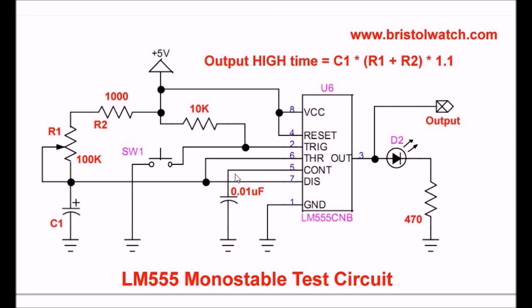Pin 5 has a bypass capacitor. Pin 1 is ground. Pins 7 and 6 — that's threshold and discharge — are connected to a resistor-capacitor circuit. The resistive circuit is a 100K potentiometer and a fixed 1K resistor, and C1 is an electrolytic capacitor, though it doesn't necessarily need to be an electrolytic.